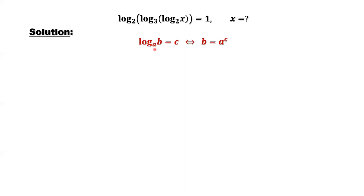Log base a of b equals c, if and only if b equals a to the power c. This is a mathematical relationship called 'if and only if.' This means if the left hand side is true, this implies the right hand side is true, and if the right hand side is true, this implies the left hand side is also true. We use this definition to solve this question.